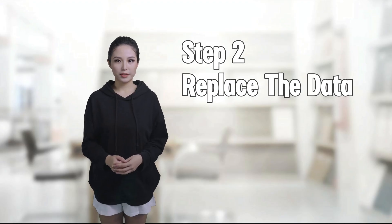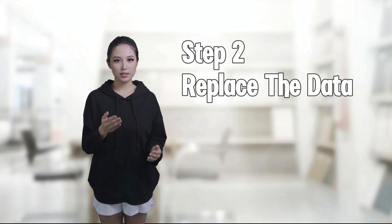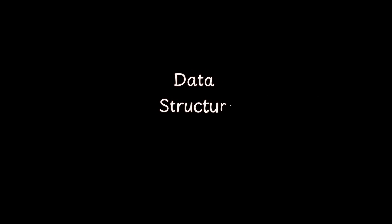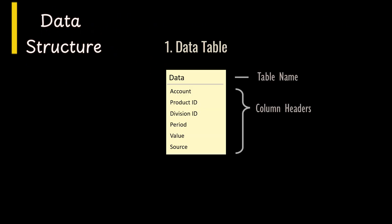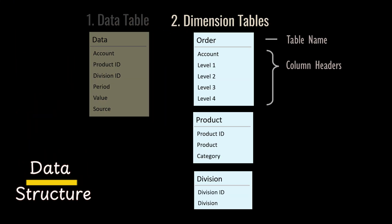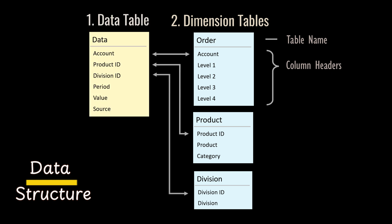Step 2: Replace the dataset. Before diving into the Excel dataset, let's briefly discuss the data structure. The main data table contains budget and current year projection figures, along with fields like account number, product ID, division ID, period, and source to distinguish between budget and current year projection. There are also three dimension tables — order, product, and division — which provide context for slicing and dicing the data more effectively. These tables are connected through key fields, allowing the dashboard to generate rich insights from your data.